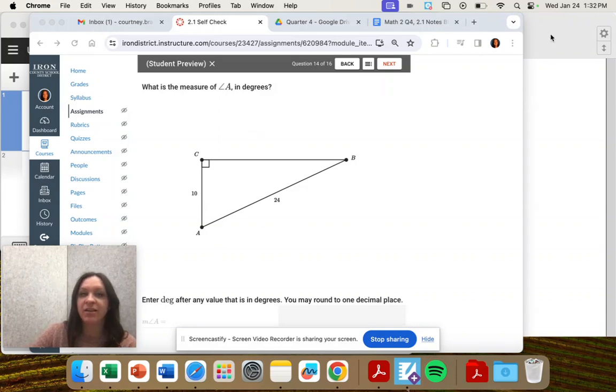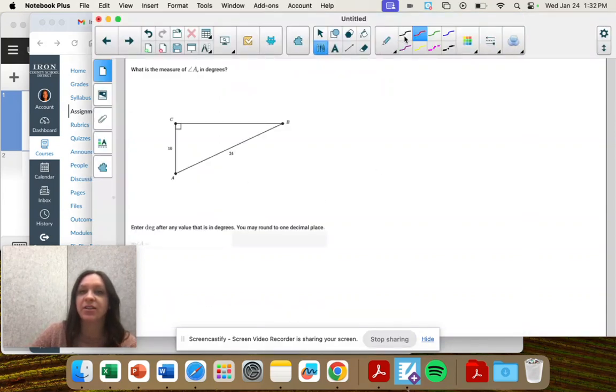What is the measure of angle A? So we're given two sides here and to find the angle measure we're going to have to use sine, cosine, or tangent.